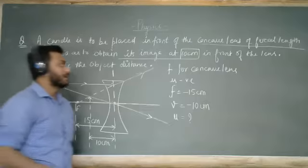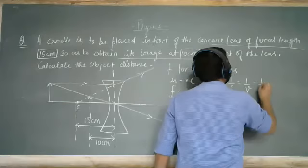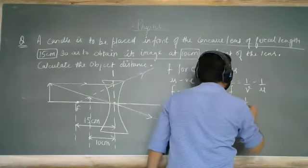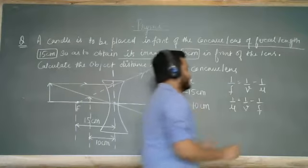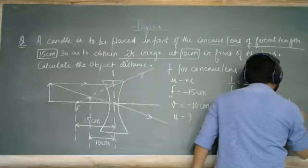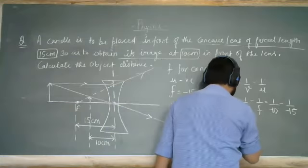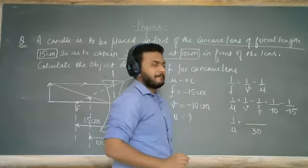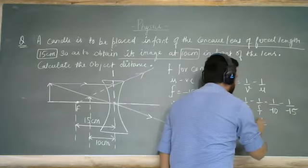We apply the lens formula: 1/f = 1/v − 1/u, so 1/u = 1/v − 1/f. Substituting: 1/u = 1/(−10) − 1/(−15). Taking the LCM of 30, we get 1/u = (−3 + 2)/30, which gives us minus 1 over 30.